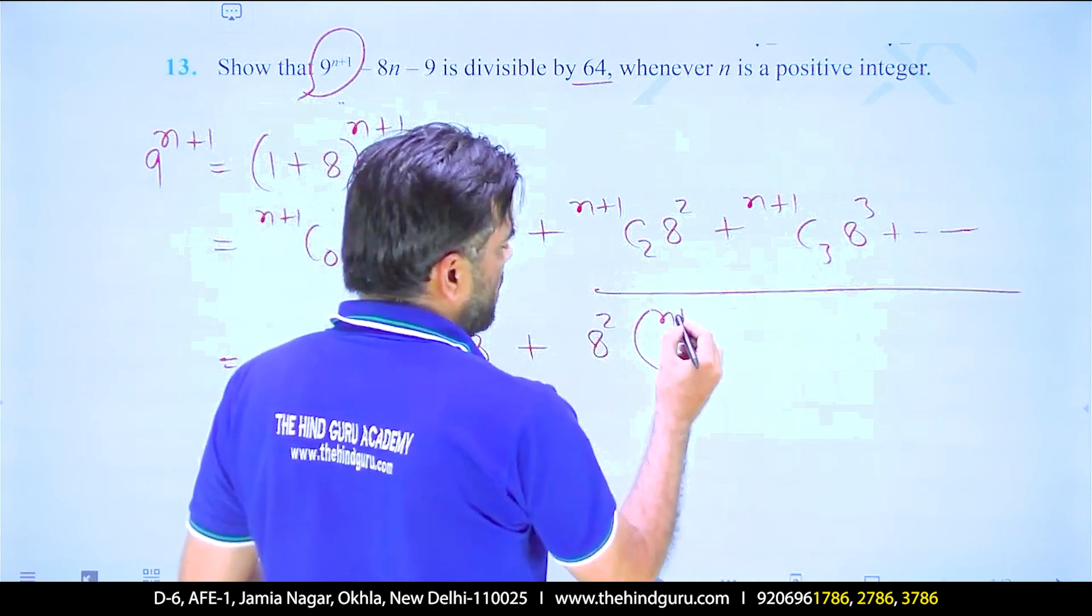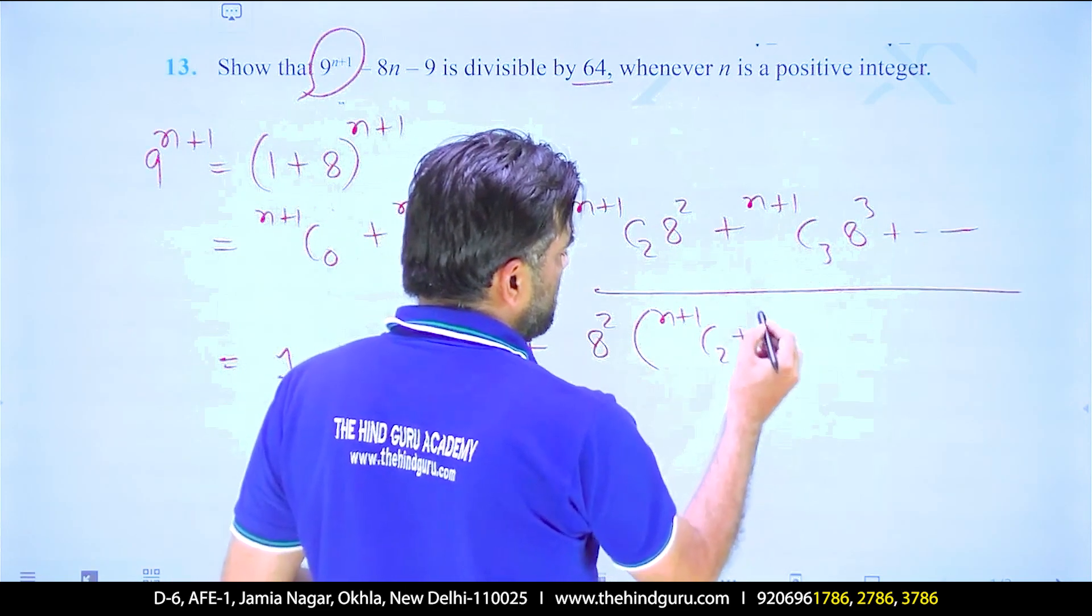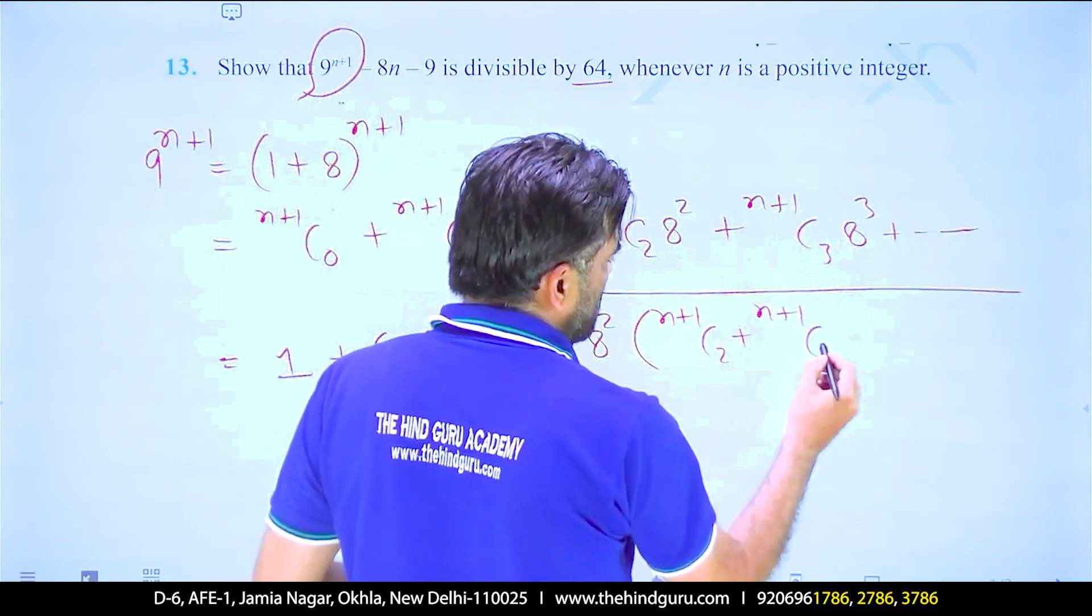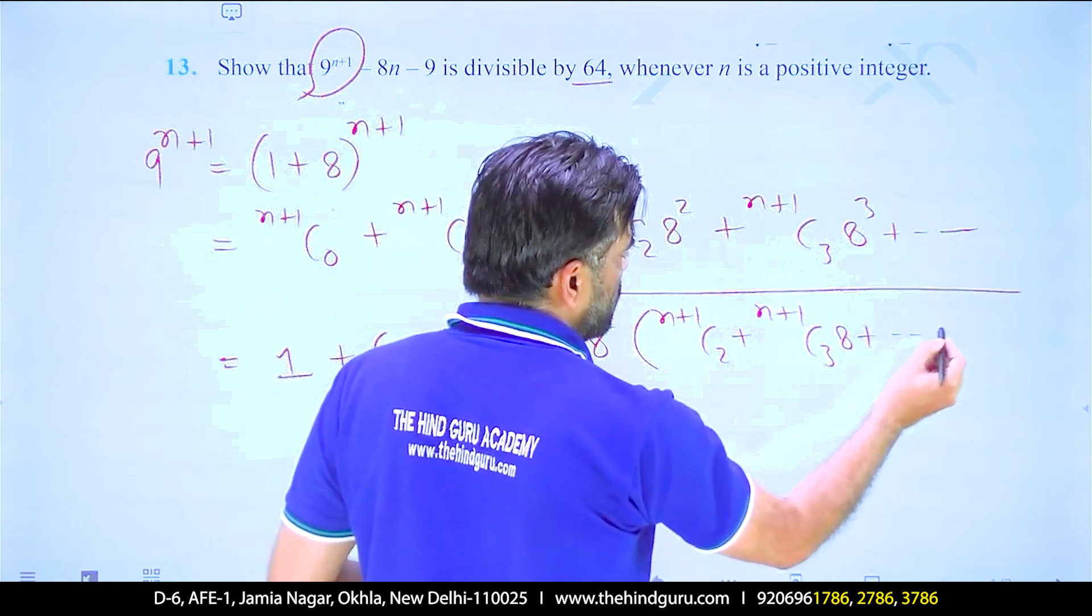The remaining will be n plus 1 choose 2, n plus 1 choose 3, and so on.